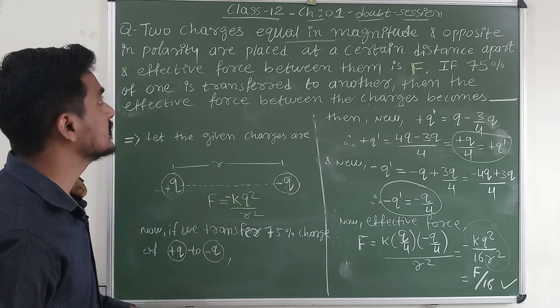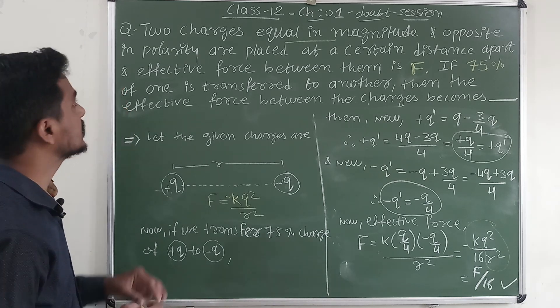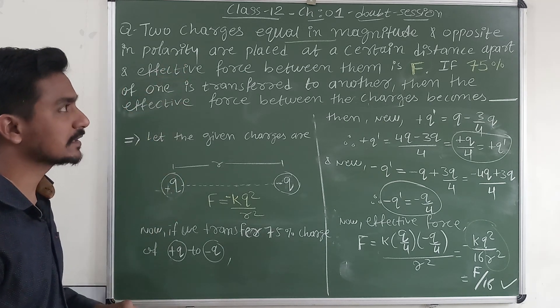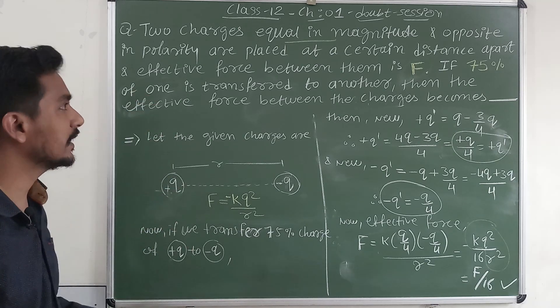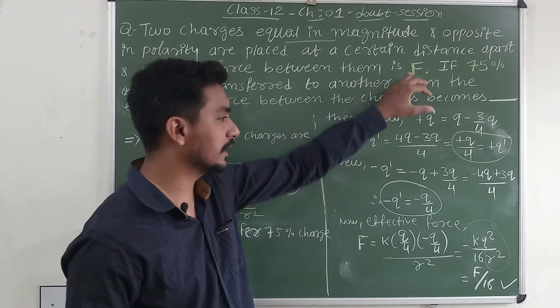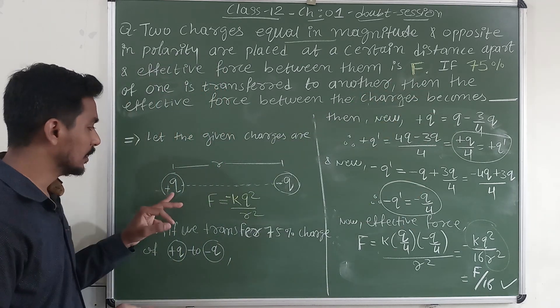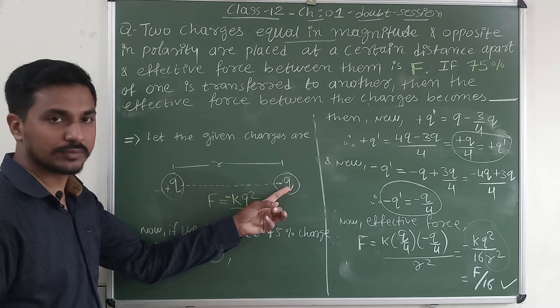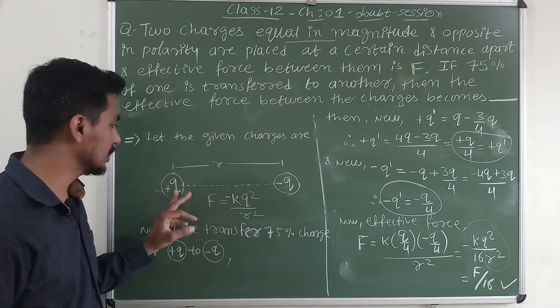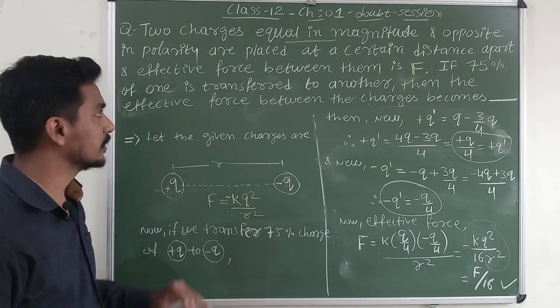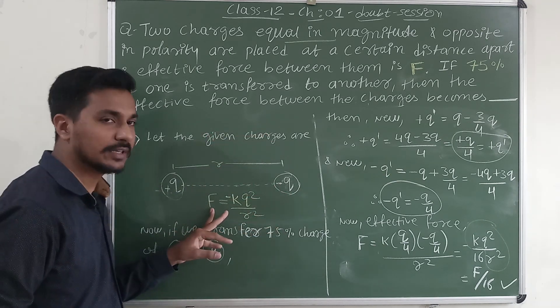The question given is: two charges equal in magnitude and opposite in polarity are placed at a certain distance apart, and effective force between them is F. What is given here? Two charges equal in magnitude means both have same magnitude but their polarity are different. The effective force is given F.